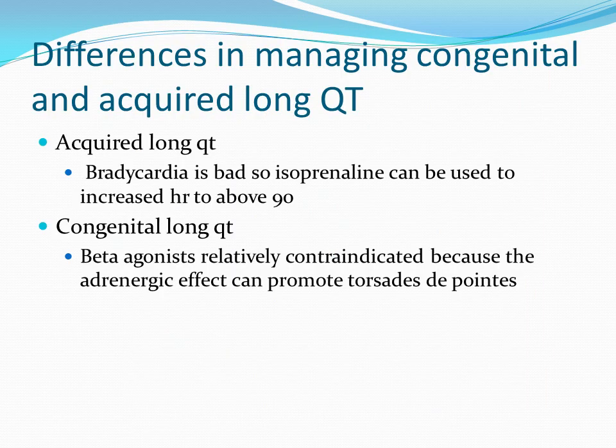One confusing aspect of managing long QT under anaesthesia is the difference between congenital and acquired long QT. Bradycardia is bad in acquired long QT, so isoprenaline can be used to increase heart rate, shorten the QT interval, and reduce the risk of Torsades. However, in congenital long QT, beta blockers are the mainstay of treatment and beta agonists are relatively contraindicated because the adrenergic effect can promote Torsades de Pointes.